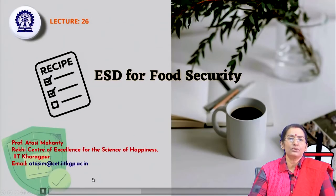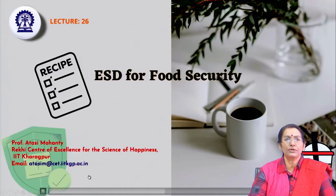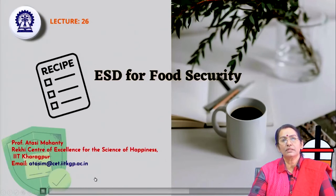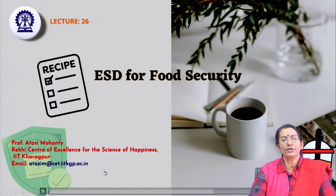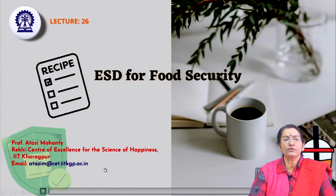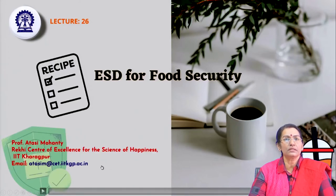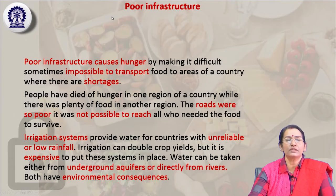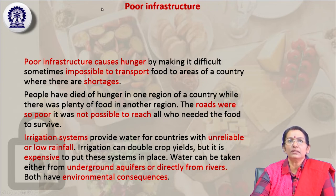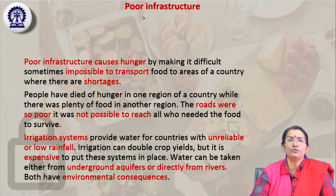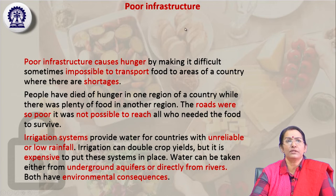Hello viewers, welcome back to this course on ESD for Food Security. In the last class we were discussing about food insecurity, the causes of the shortage of food and wastage, and what are the three pillars of food security. Moving ahead, we will now discuss other things like poor infrastructure, and the reasons of poverty and food insecurity — another factor being poor infrastructure.